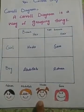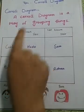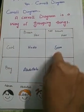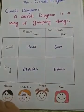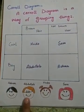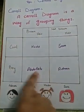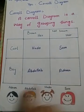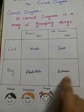First we'll find the girl who has brown hair. The girl who has brown hair is now identified. The girl who doesn't have brown hair is Sara — Sara doesn't have brown hair. Now the boy who has brown hair is Abdullah — Abdullah has brown hair, so his name goes in this block. The boy who doesn't have brown hair is Adnan — Adnan doesn't have brown hair, so his name goes here in this block.